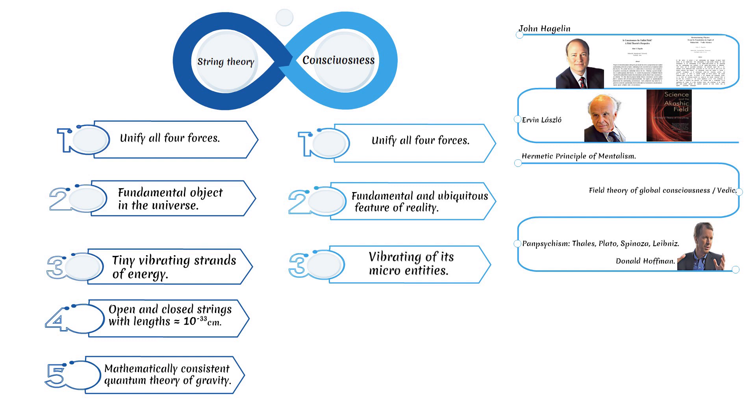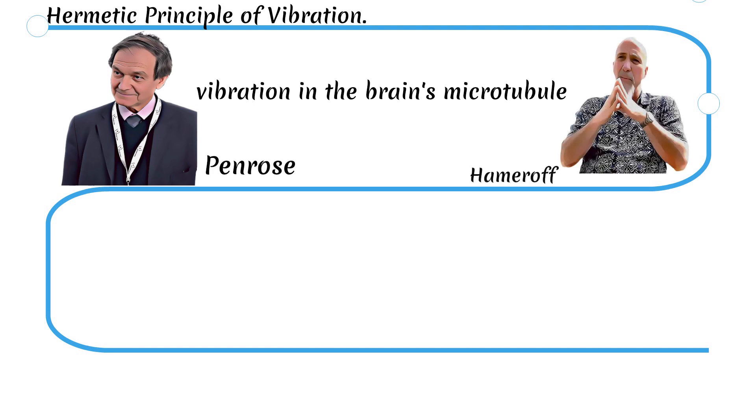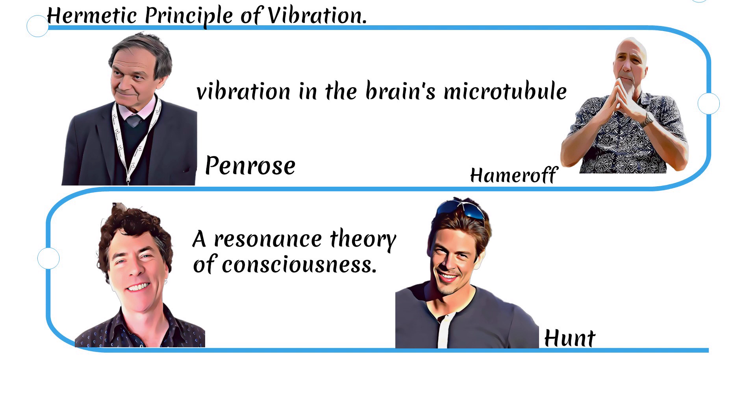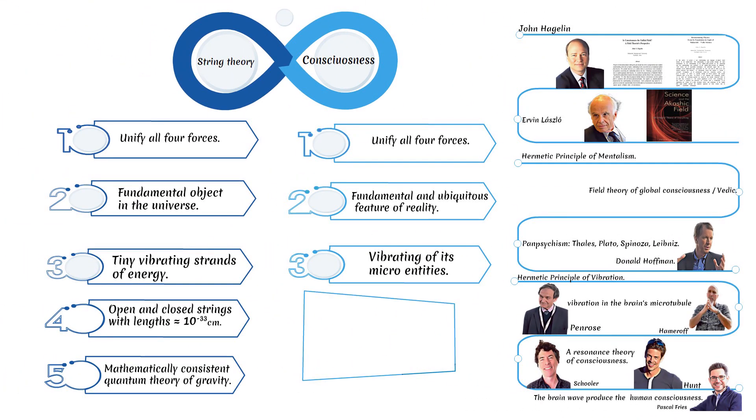But what are the micro entities of consciousness that vibrate? In correlation with scientific theory, in this context we consider hypotheses from the ancient era to our modern day: the hermetic principle of vibration—nothing rests, everything moves, everything vibrates. According to Penrose and Hameroff's findings, consciousness is raised due to vibration in the brain's microtubules. A resonance theory of consciousness: according to Hunt and Schooler, synchronized vibrations are generally at the heart of human consciousness and physical reality. From the view of neurophysiologist Pascal Fries, brain waves gamma, theta, and beta work together in the brain to produce the various types of human consciousness.